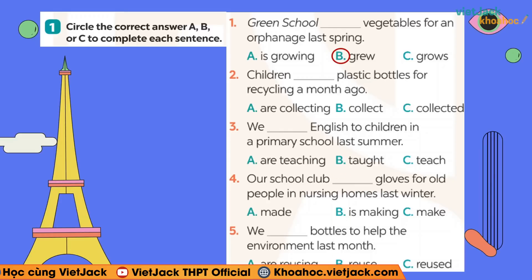Number 1: các bạn nhìn cho cô — dấu hiệu nhận biết của chúng ta sẽ có last spring (mùa xuân năm trước). Quá khứ đơn của grow sẽ là grew. Câu này có nghĩa là: Green school grew vegetables for an orphanage last spring — Trường Green đã trồng rau cho một trại trẻ mồ côi vào mùa xuân năm trước. Tiếp theo, number 2: dấu hiệu nhận biết là a month ago (một tháng trước).